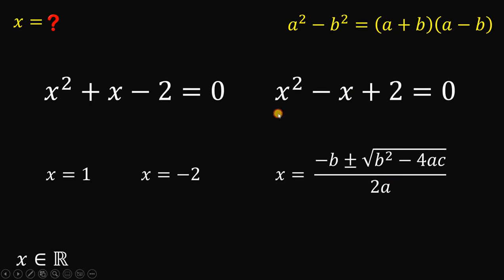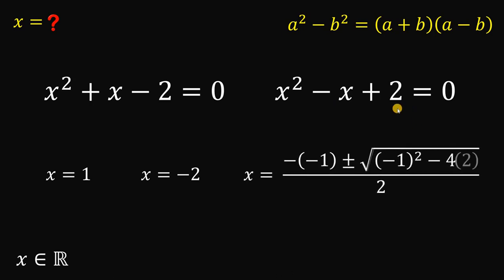Now, the value of a, again, is the coefficient of x squared, which is 1. The value of b is the coefficient of x, which is negative 1. And the constant term is the value of c, which is 2.